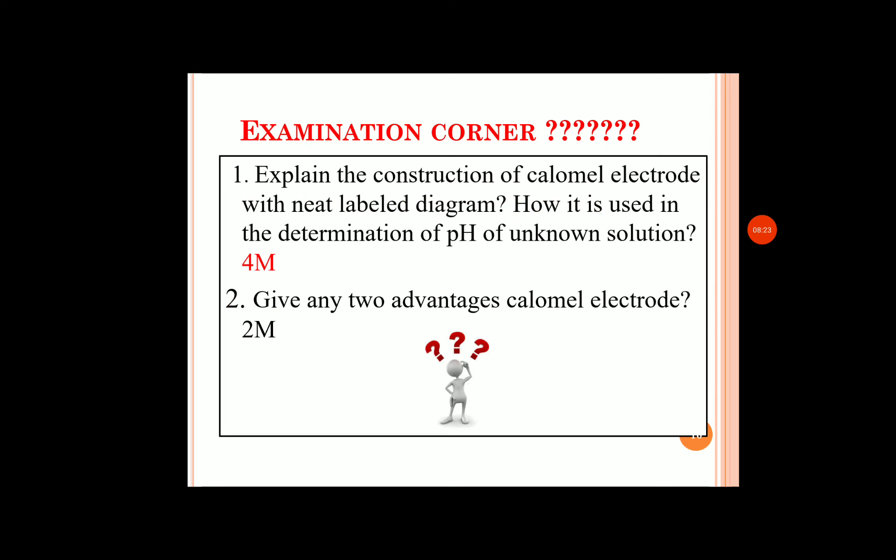Now let us come to the examination corner. Possible questions asked in examinations: first, explain the construction of the calomel electrode with a neat labeled diagram and how it is used in the determination of the pH of an unknown solution — this is a 4-mark question. Second, give any two advantages of the calomel electrode — this is a 2-mark question.